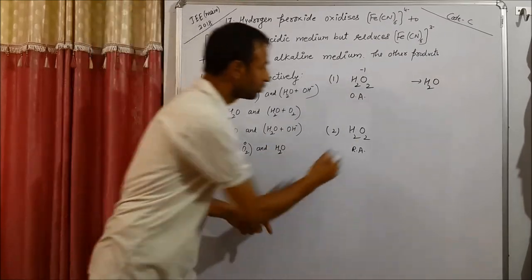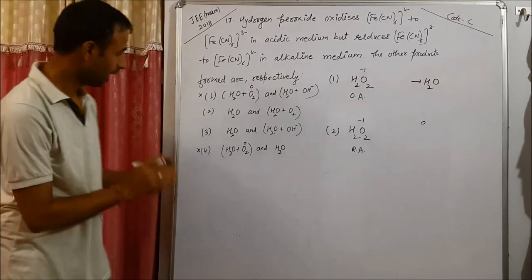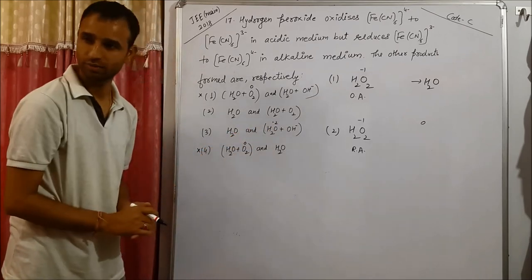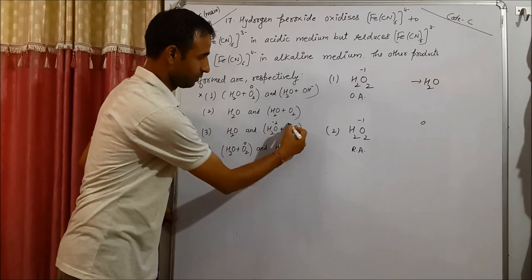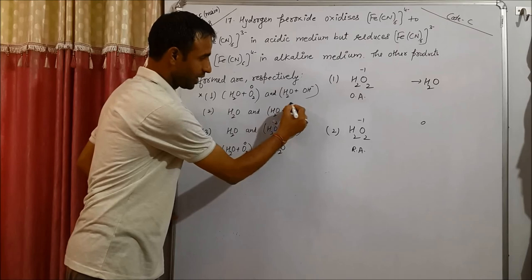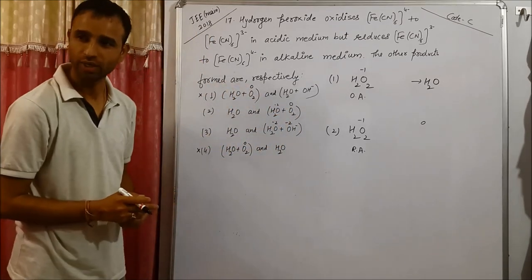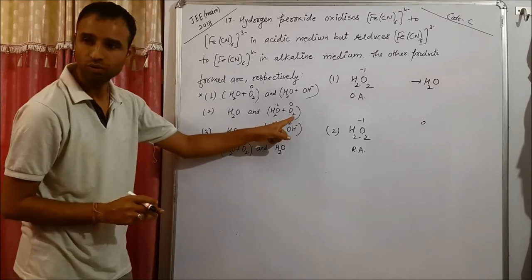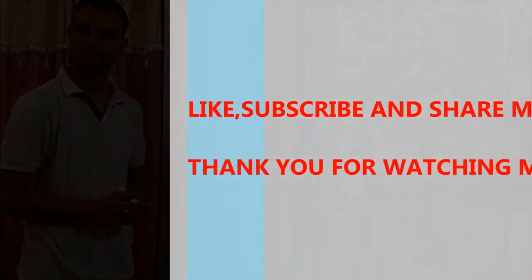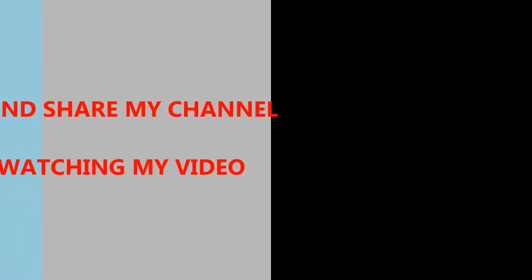For H2O2, oxygen has minus 1 oxidation number. It goes to zero in O2. In water, oxygen has minus 2. So minus 1 is the oxidation number for peroxide. That means the second option is correct.